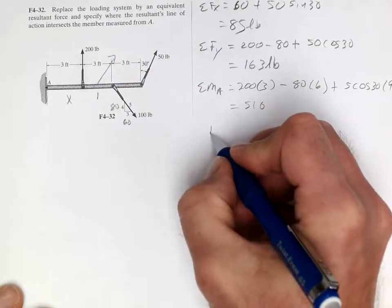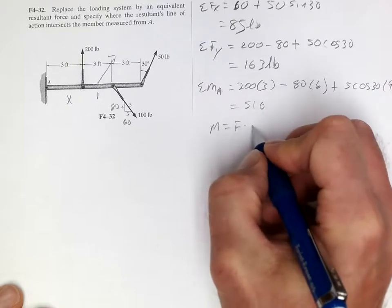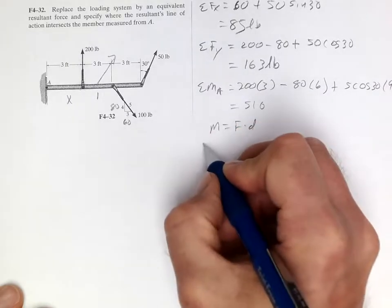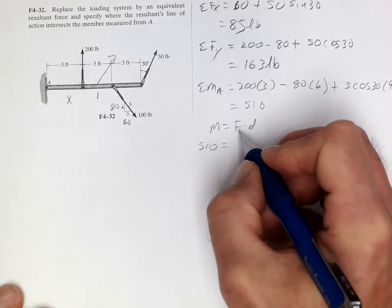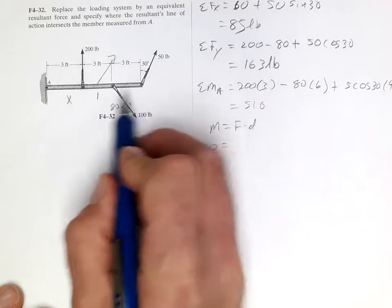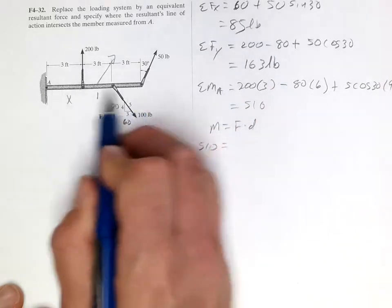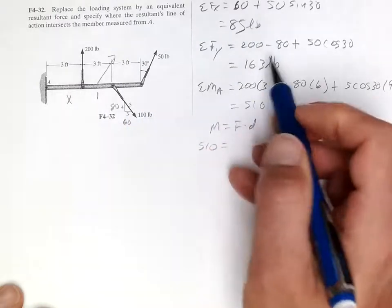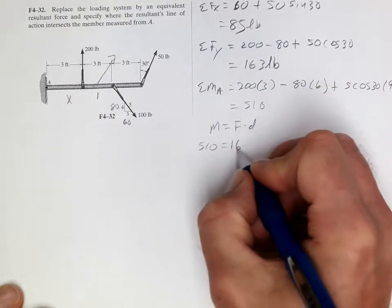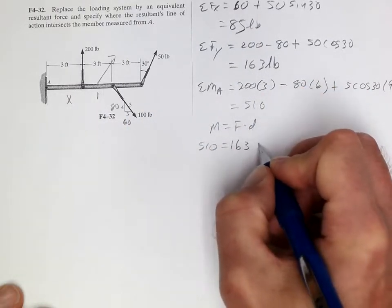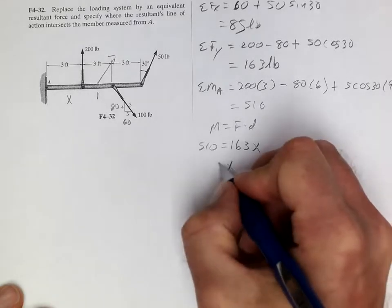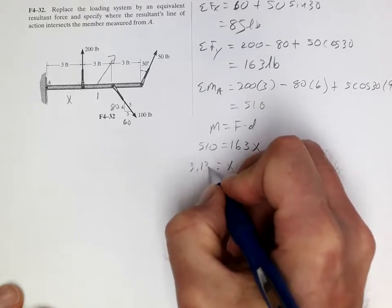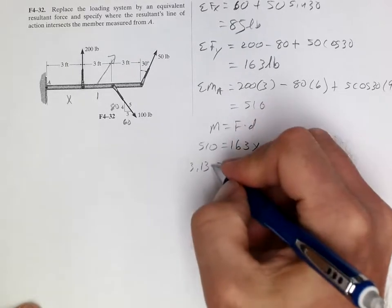Well, the moment equals the force times the distance. So we're going to do 510 equals the force. In this case, the horizontal force does nothing to cause a moment because it acts through A. So all we need is the vertical force, 163, times the distance x. And so x is equal to 3.13. And that would be feet.